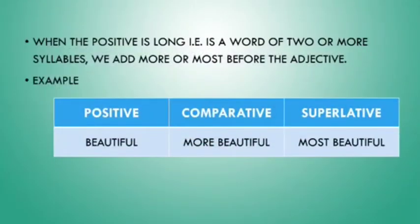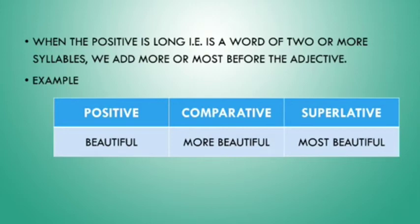The next rule: when the positive is a long word, that is a word of two or more syllables, we add 'more' or 'most' before the adjective. To change it into comparative and superlative forms, we add 'more' and 'most' respectively. For example, the word 'beautiful' — to change it into comparative, we add 'more,' and to change it into superlative, we add 'most.' So it becomes 'beautiful,' 'more beautiful,' 'most beautiful'.